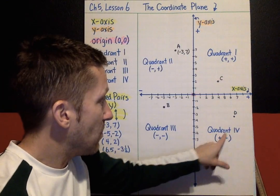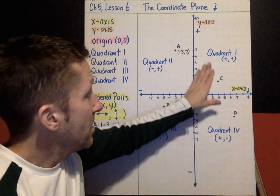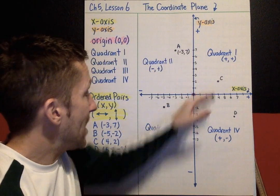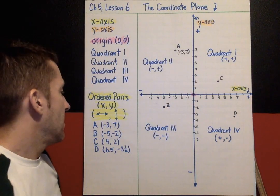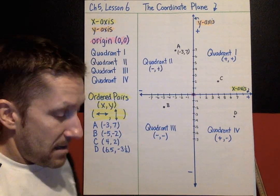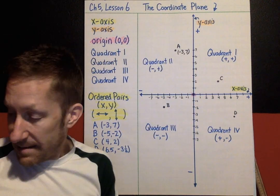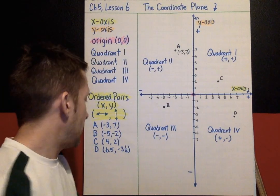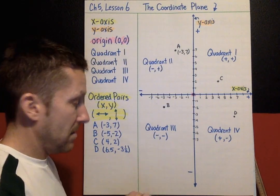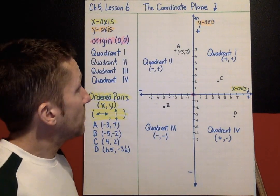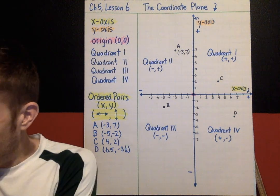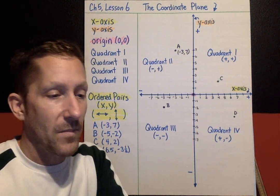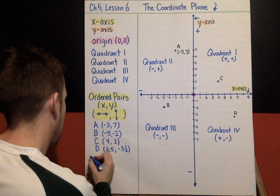This point is in quadrant four. We've now got an ordered pair in every quadrant. The last thing we'll talk about today are reflections.